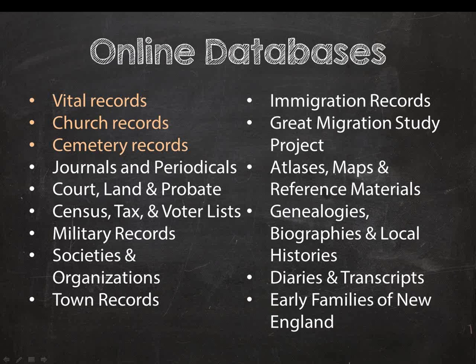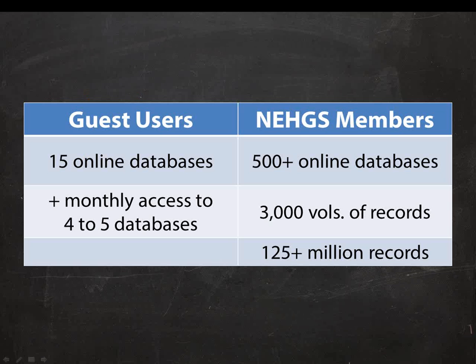There are four different types of results you'll see on our website: you may find an index, a transcription of an original, a further published transcription of the original into a book, or the original record itself. Most of the databases I'm going to talk about today can only be accessed by current NEHGS members. We do, however, have a free program in which guest users can access about 15 databases on AmericanAncestors.org. We also offer temporary access to databases which were just launched or expanded — for example, since we are adding regularly to the Barber collection, guest users will have access to that on a month-to-month basis.